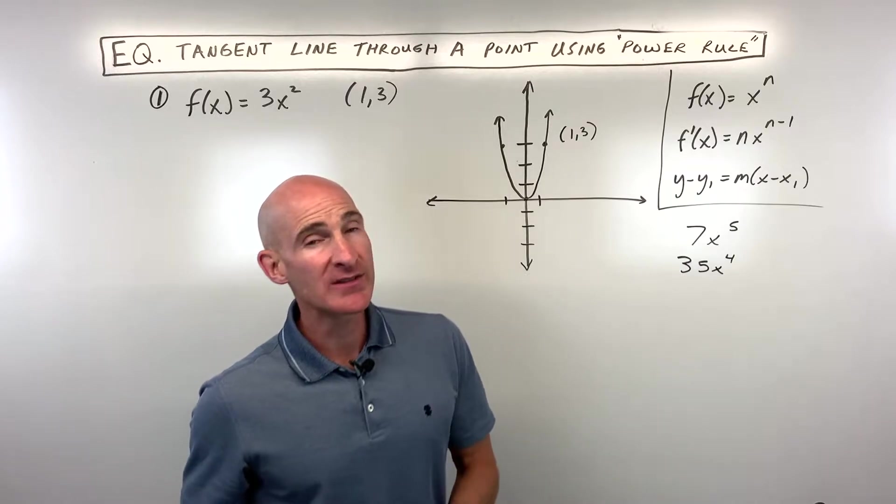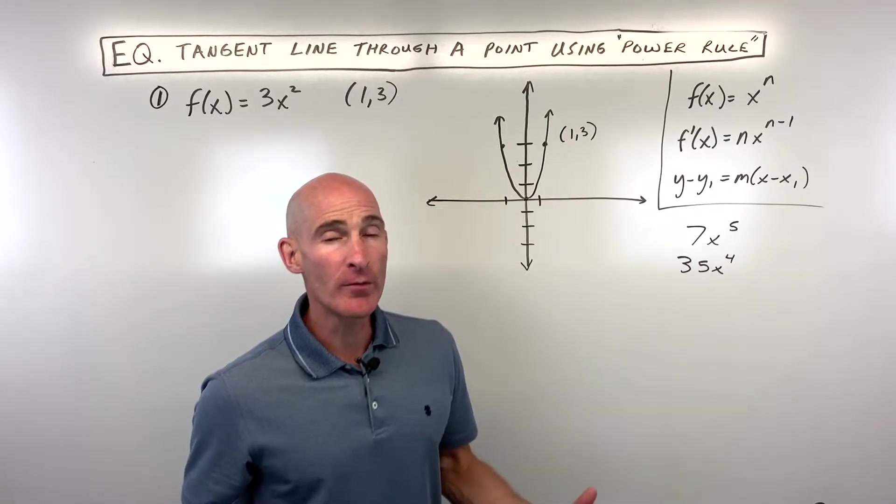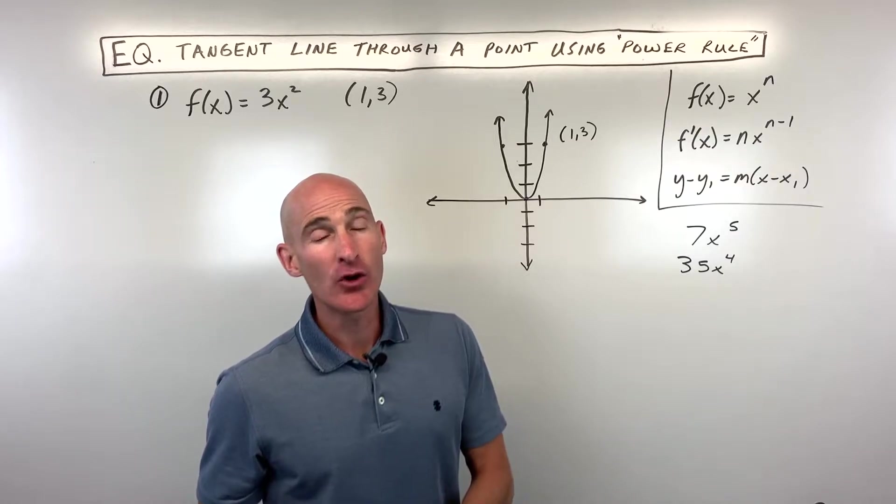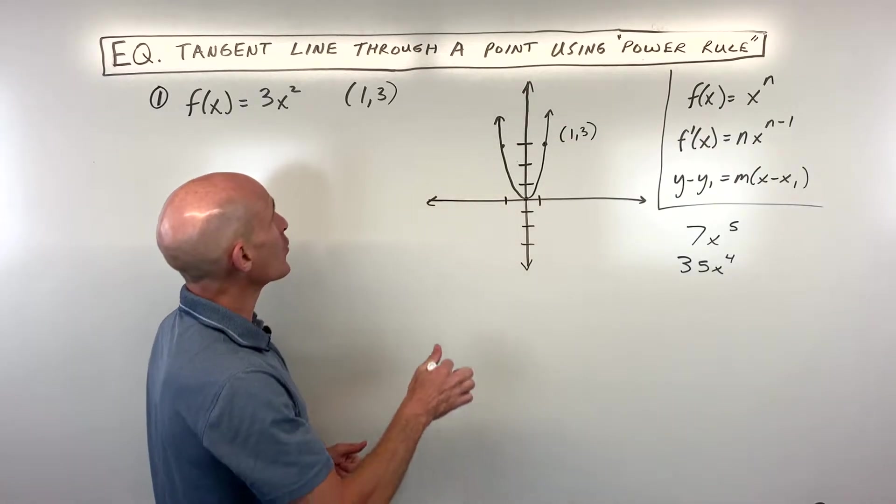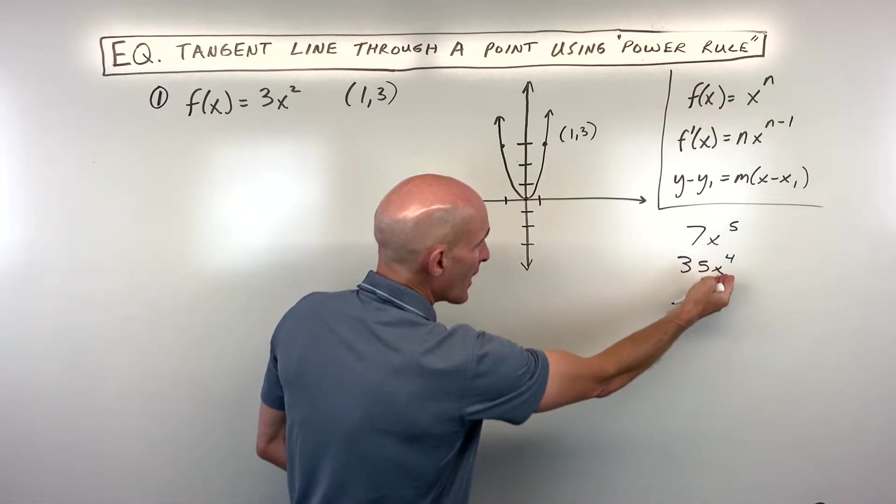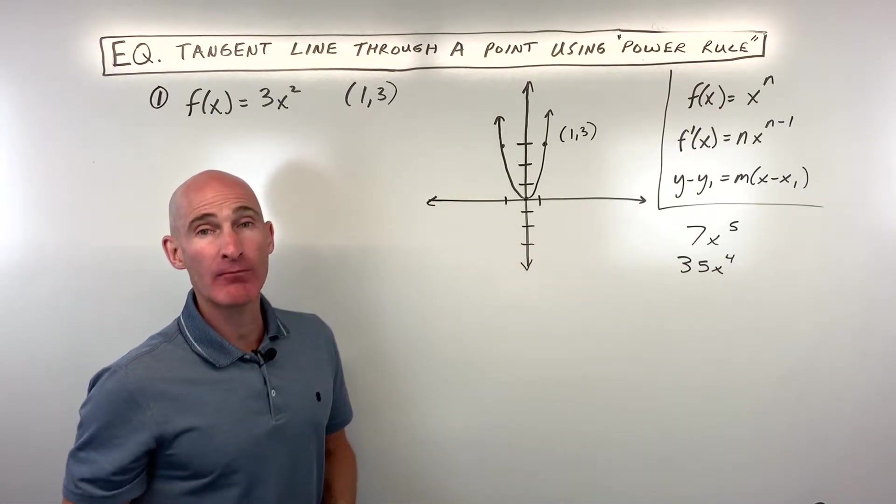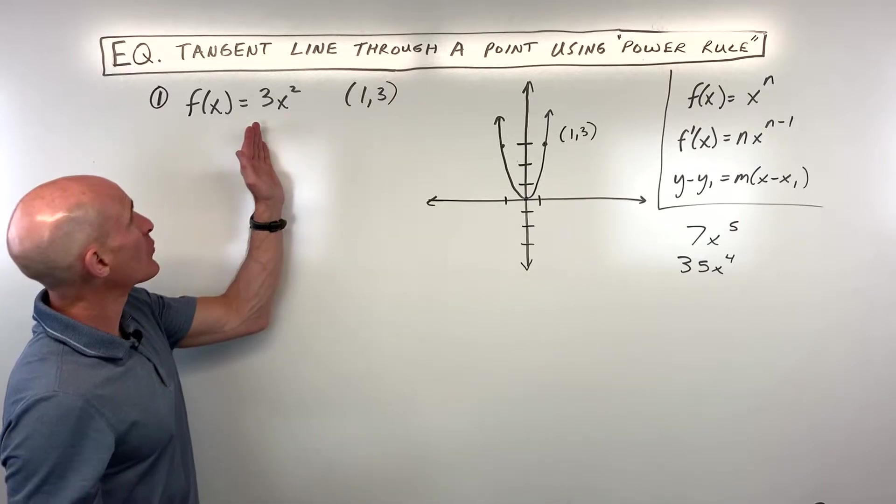And remember, what is the derivative? The derivative is really a formula for finding the slope of the tangent line. What we're going to do is use the x-coordinate to plug in for x to find the slope at that point. Let's dive into example number one.